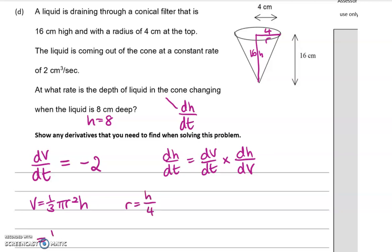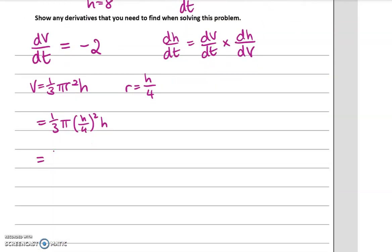So then if we put that into the volume, we get (1/3)π of (h/4)² times by h, which then becomes (1/48)πh³.